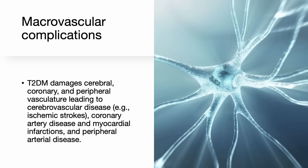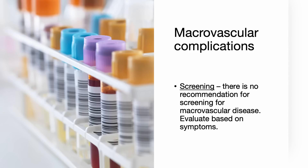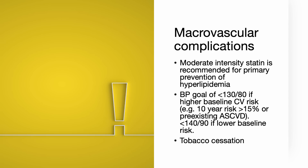Macrovascular complications involve the cerebral, coronary, and peripheral vasculature, leading to cerebrovascular disease such as ischemic strokes, coronary artery disease and myocardial infarctions, and peripheral arterial disease. Unlike microvascular complications, there is no recommendation for screening for macrovascular disease. The most important ways to reduce macrovascular complications include starting patients on moderate-intensity statin, recommended for primary prevention of hyperlipidemia, controlling blood pressure to a goal of less than 130/80, and if the patient smokes, encouraging tobacco cessation.